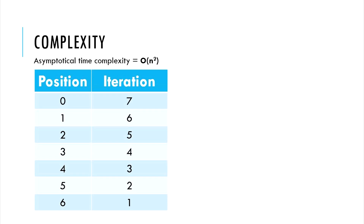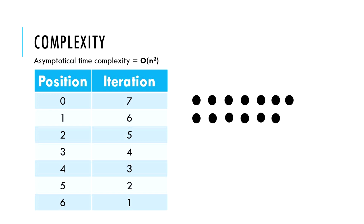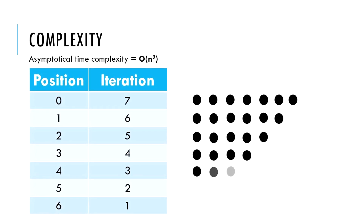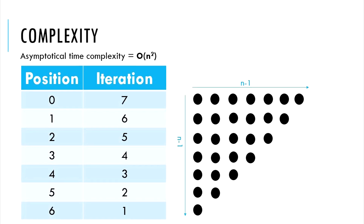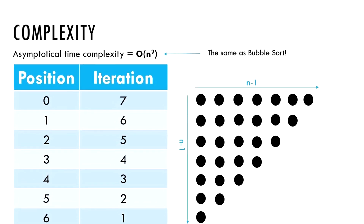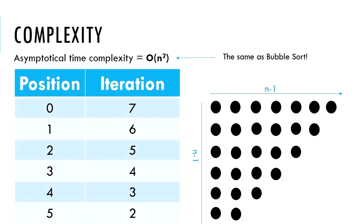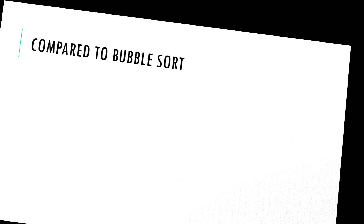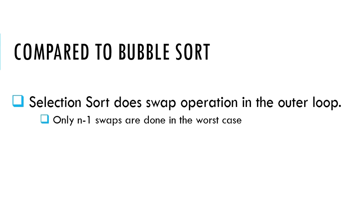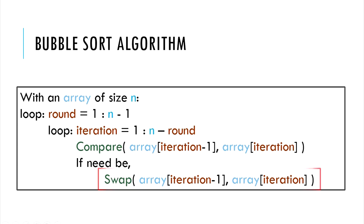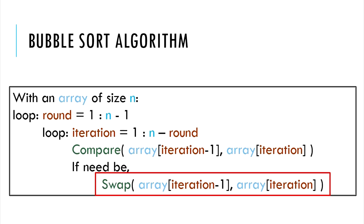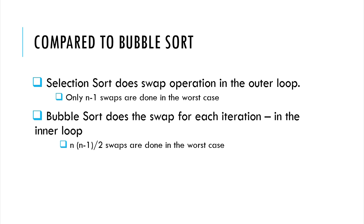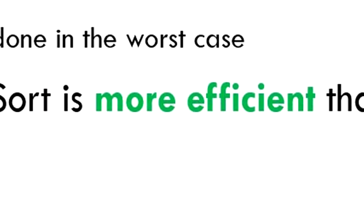How do we get this? Well, using the same approach as we did in our bubble sort video — the dots representing the number of iterations and them assuming the shape of a right-angled triangle. I will not repeat these steps as you could easily check out the bubble sort video. If the asymptotical time complexity of selection and bubble sort are the same, why did we state that selection sort was a bit more efficient? It is because of a lesser number of swap operations. In selection sort, we do a maximum of n-1 swaps for the outer loop only. In bubble sort, the swap operation may be done for all the iterations — that is, n times n-1 divided by 2 swaps. Therefore, selection sort is more efficient.